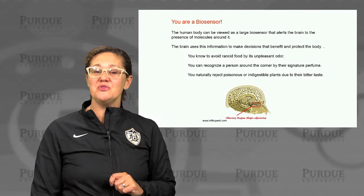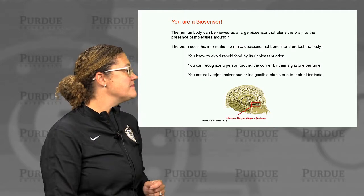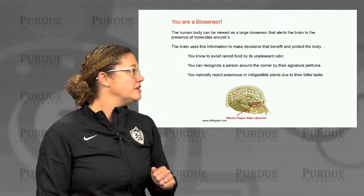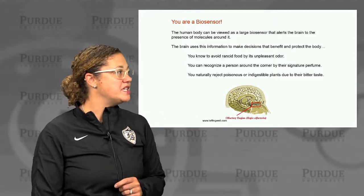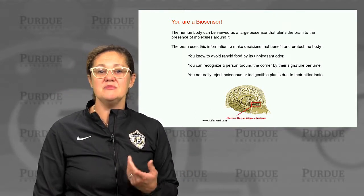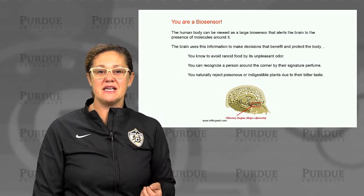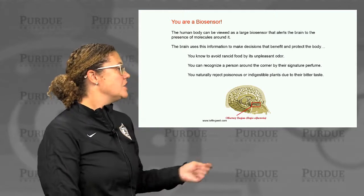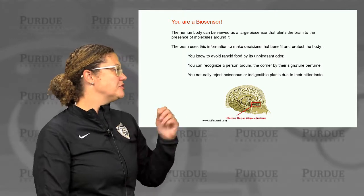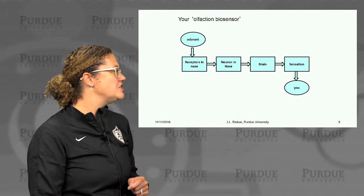You can also think of yourself — your human body — as a biosensor. Your body alerts your brain to the presence of molecules around it, and your brain uses this information to make decisions. You know that a piece of food is rancid by its unpleasant odor. You've evolved inherent mechanisms that make that gross to you. You can recognize a person around the corner by their signature perfume. You naturally reject poisonous or indigestible plants due to their bitter taste. In this sense, you are a biosensor.